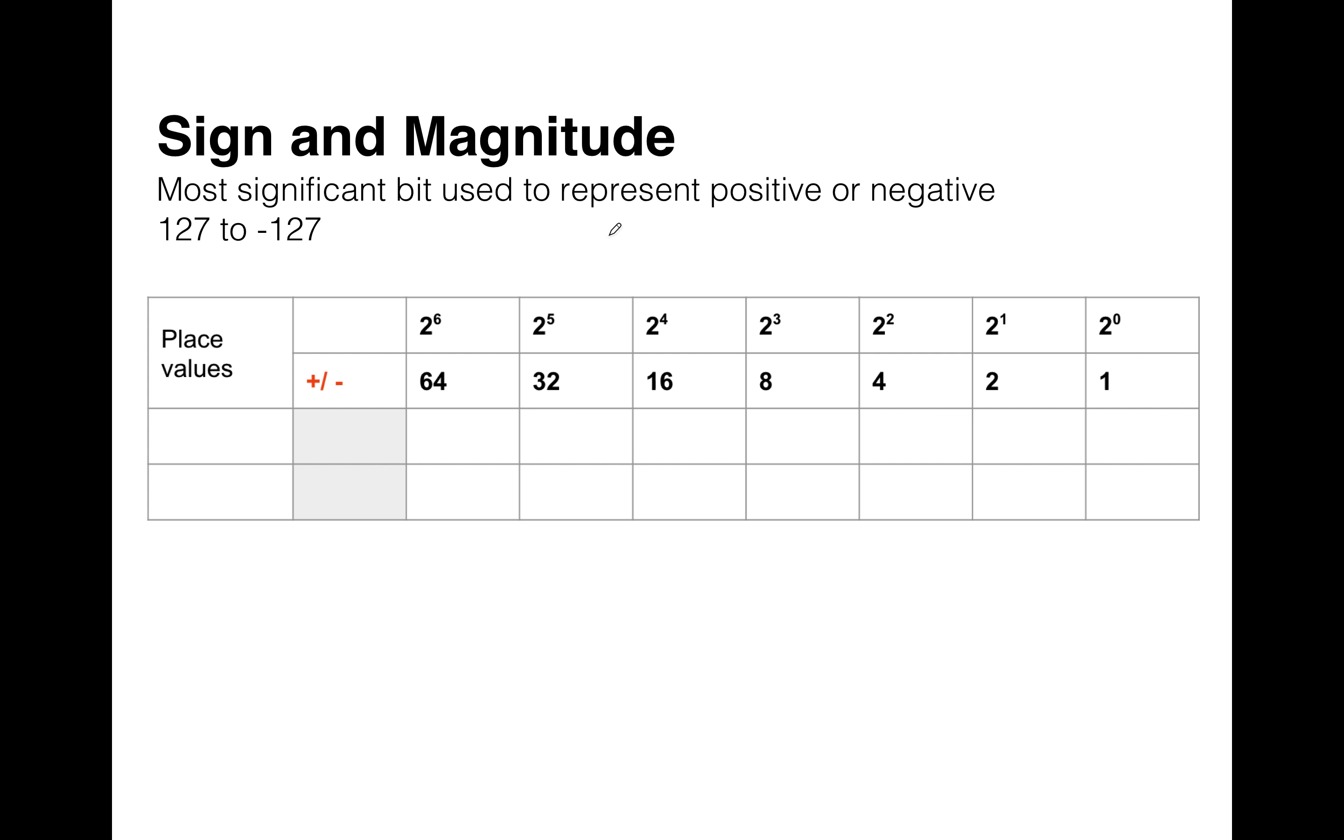So if we were going to convert the number 78, which is a positive number, we use the same process as normal binary. First, we'll put a zero in here, and then ask: is 78 bigger than 64? It is, so we put a one in there. The remainder is 14, and then we just go along the columns. Zero, zero, we know that's eight, so the remainder is six and it's 01001110.